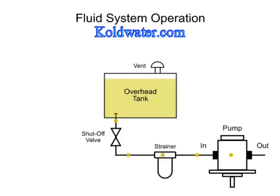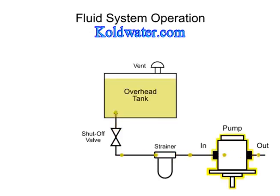The placement of fluid system components in relation to each other is critical to successful operation of the system. Fluid naturally flows from areas of high pressure to areas of low pressure. Pumps operate by creating low pressure at the inlet, which allows liquid to be pushed into the pump by atmospheric or pressure head.